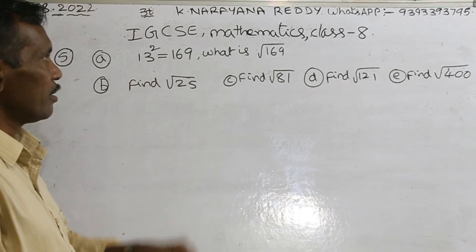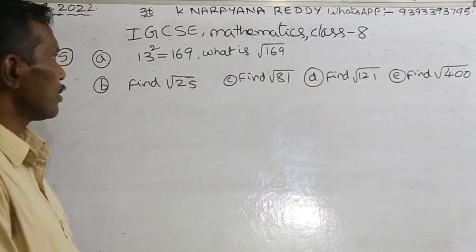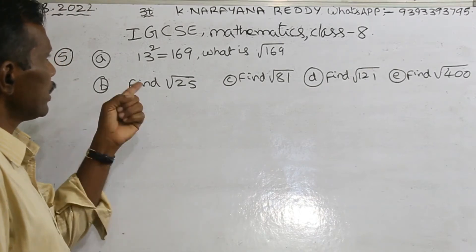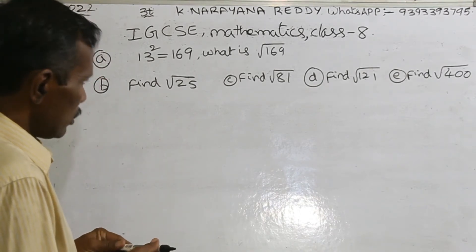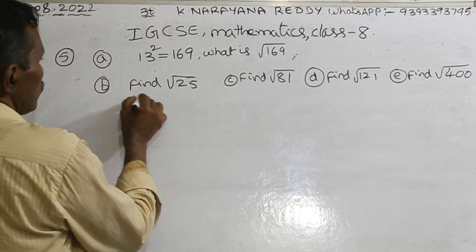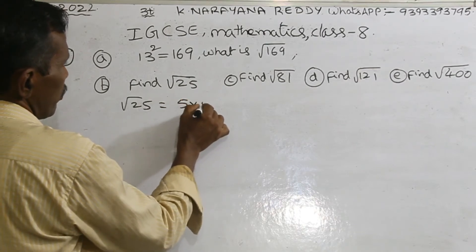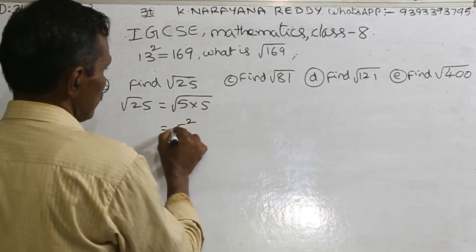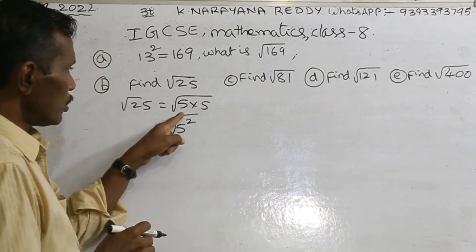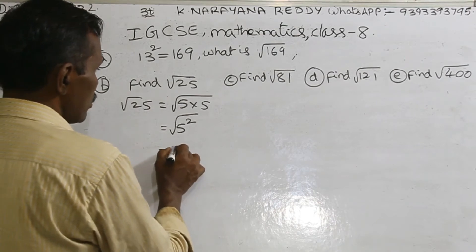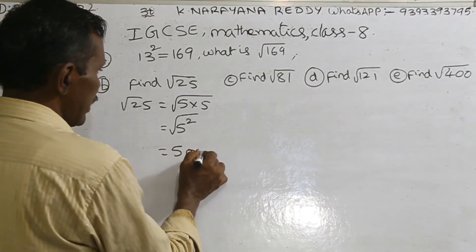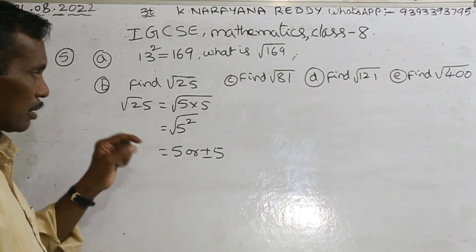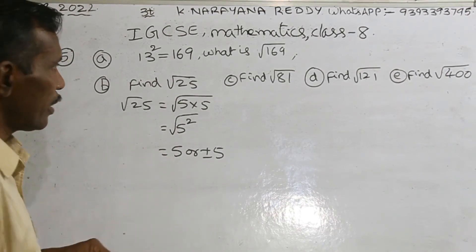13 square equals 169. What is root of 169? Simple, very easy. Because 13 square means what? 13 into 13. Now see here. Root 25 equals 5 into 5, which is 5 square. Root and square get cancelled, that means 5. But this can also be written as plus or minus 5. Please remember it. Almost all, you can write this, but the real answer is plus or minus 5.